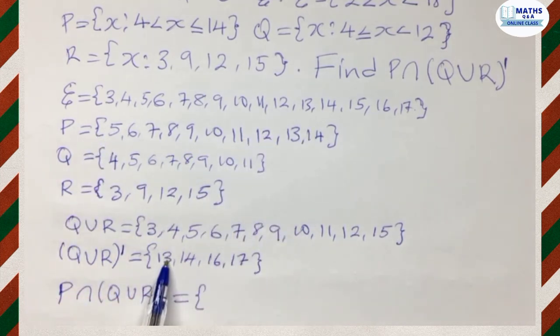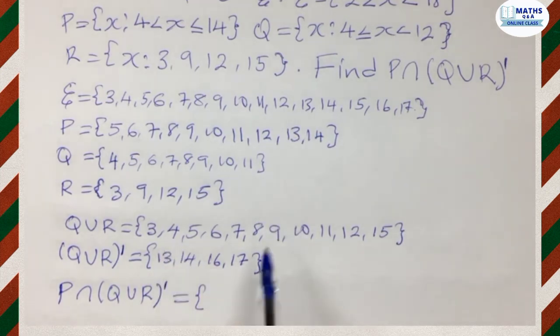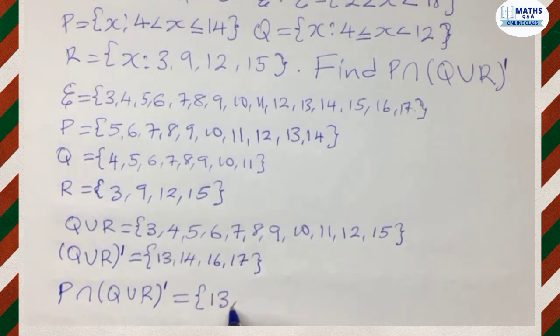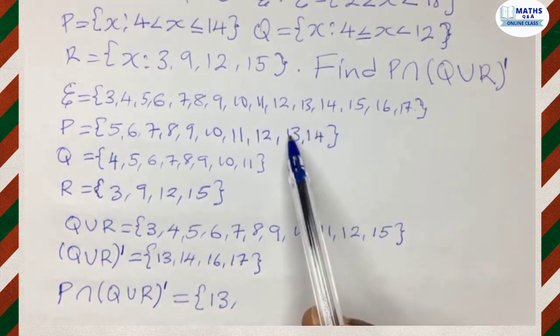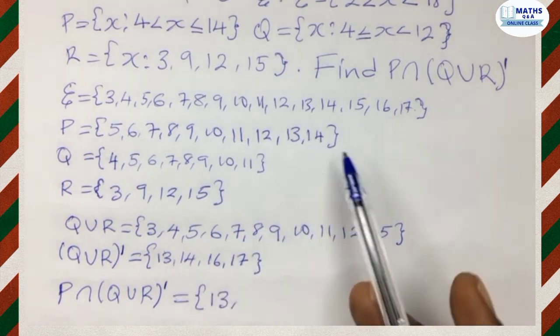With the set P, we have 13, which is appearing in both. Okay. We have 13. So we put it down nicely. 13. Now let's look at it.